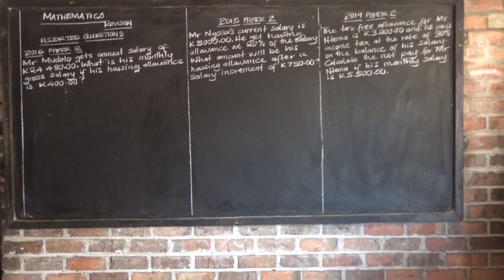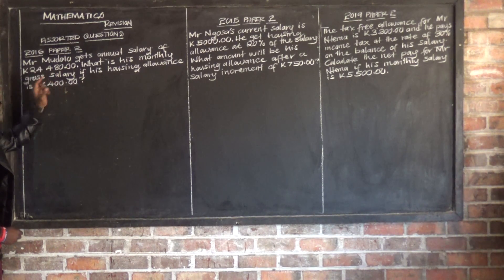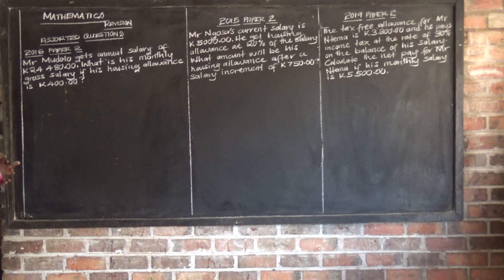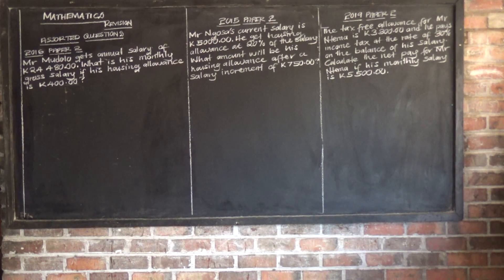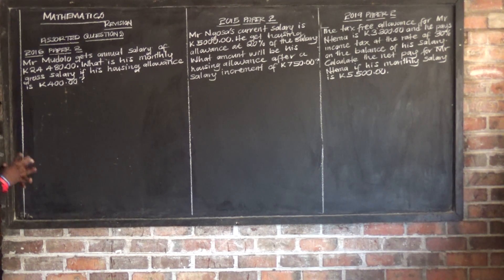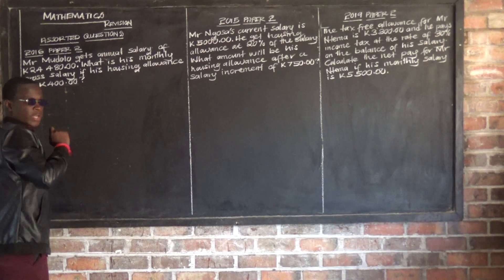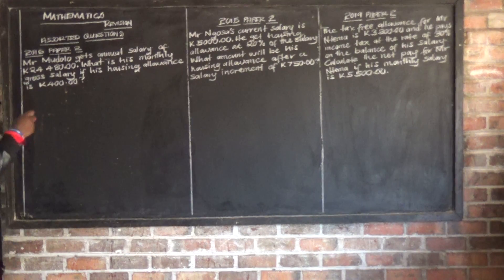So this person had an annual salary of 24,480 kwacha. That was his annual salary — the salary for the entire year. We know 12 months is equivalent to one year. So the salary for one year was 24,480 kwacha, and that's the meaning of annual salary.